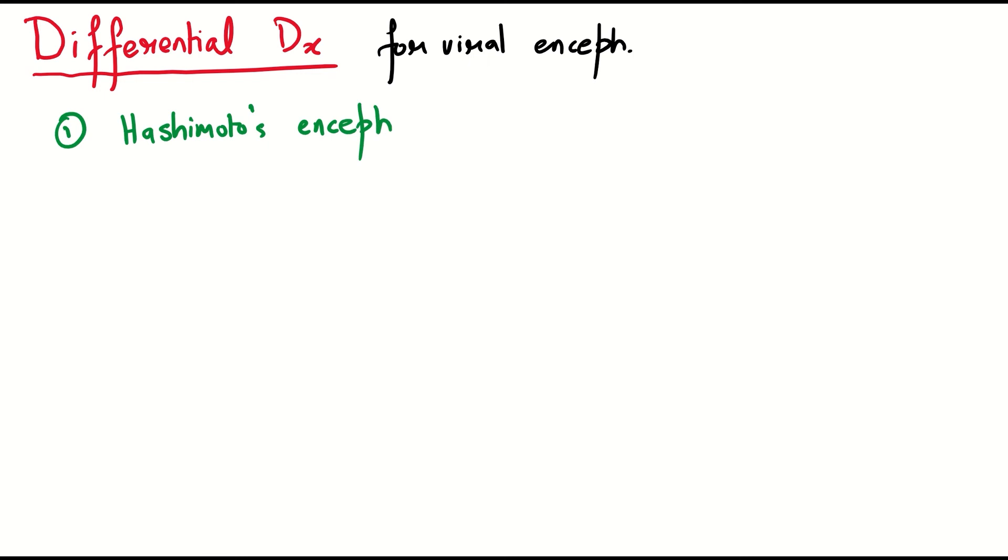Last but not the least, I will outline the differential diagnosis for viral encephalitis as it has been mentioned in Harrison's. They include Hashimoto's encephalopathy, prion disease, Naegleria fowleri, Balamuthia, and Acanthamoeba.